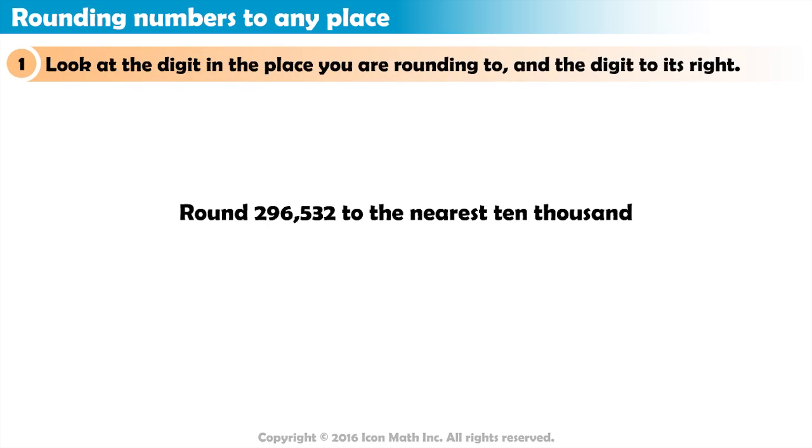What if we were asked to round 296,532 to the nearest 10,000? We look at the 10,000s digit, which is the digit 9. The digit to its right is 6, which is greater than 5.